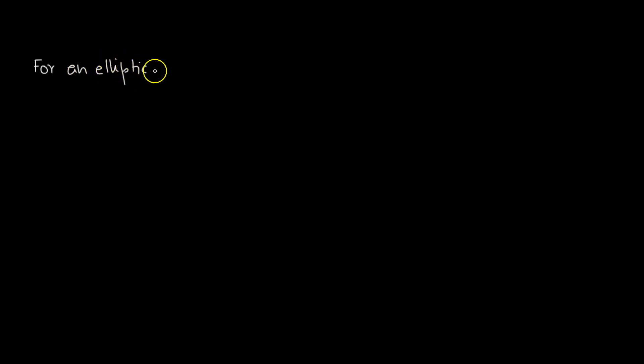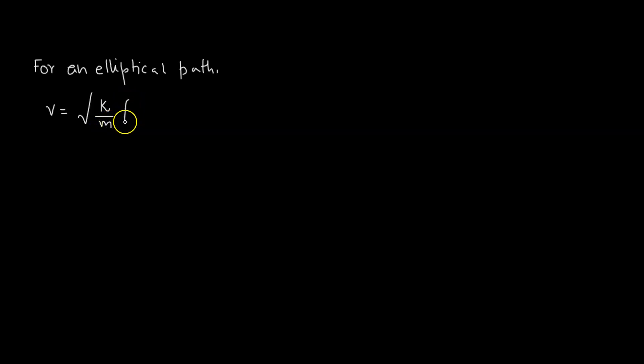Hello and welcome to lecture number 13 on a series on classical mechanics. We're continuing where we left off in the previous class. We considered a problem where we had the expression for velocity for an elliptical path. For an elliptical path, the expression for velocity was given by the square root of k over m multiplied by 2 over r minus 1 over a.